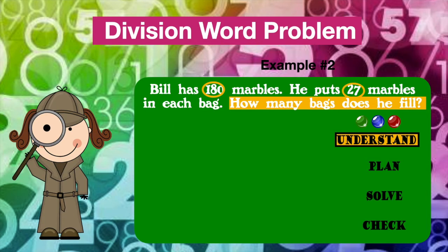Now it's time to plan. Here, we choose a strategy that makes sense and works best for us. When we look at the problem, there is a keyword that helps us answer it. Can you guess what it is? If you said 'each,' you are correct. Again, 'each' tells us that we must divide.